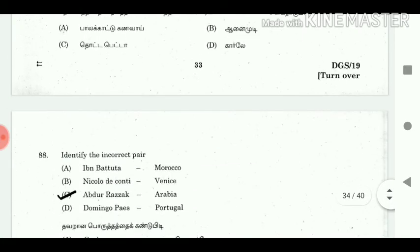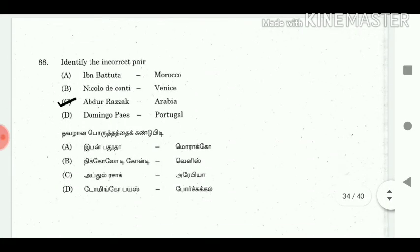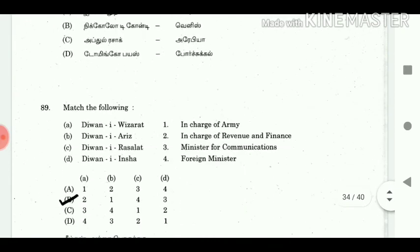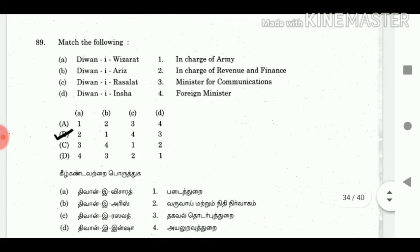88. Identify the incorrect pair. Answer: Abdur Razzak — Arabia. 89. Match the following. Answer: A2, B1, C4, D3.